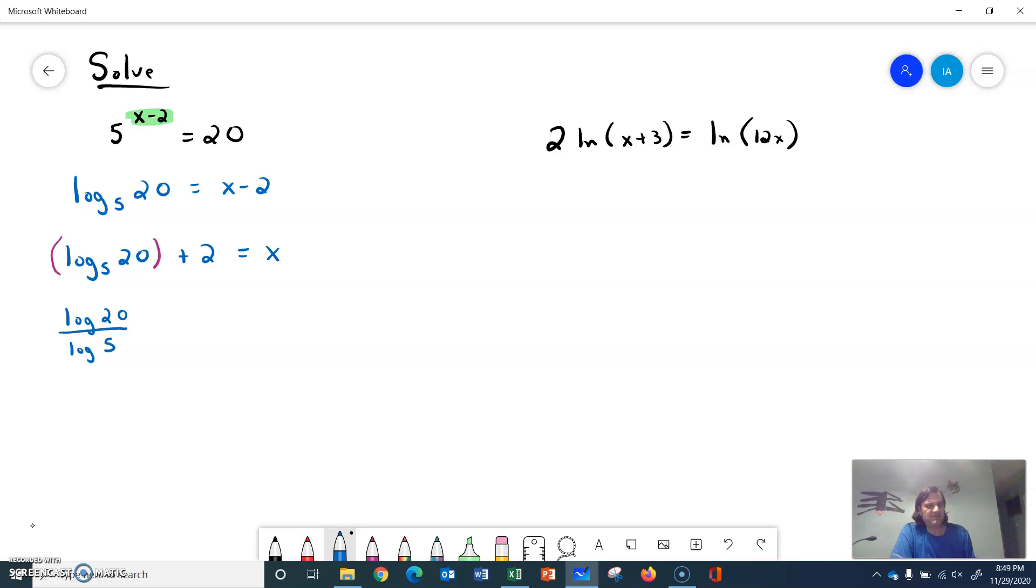So the change of base formula would have us rewrite as log of 20 over log of 5, and it'll still be plus 2 equals x. And that's still an exact answer. Let's see what the calculator says.